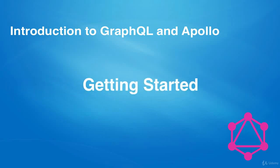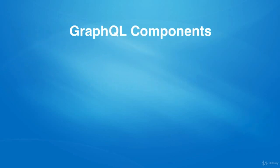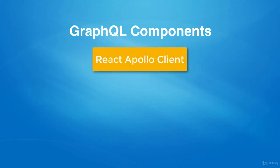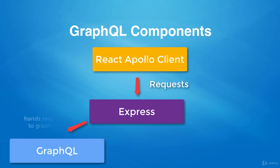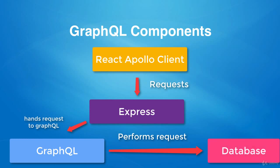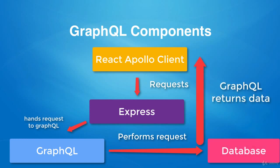Before going into any coding, let's understand what we're getting ourselves into. There are four components to a GraphQL application that we need to master before building our Twitter clone. To set up the user interface, we're going to need a React client. The React client will make requests to our Express server, which will hand over that request to GraphQL, which will then perform that request on our database and return the results all the way back to our browser.